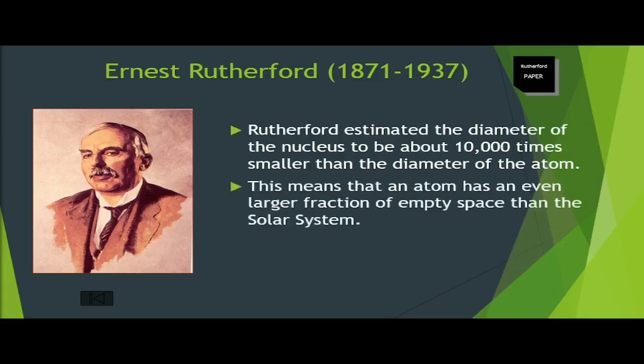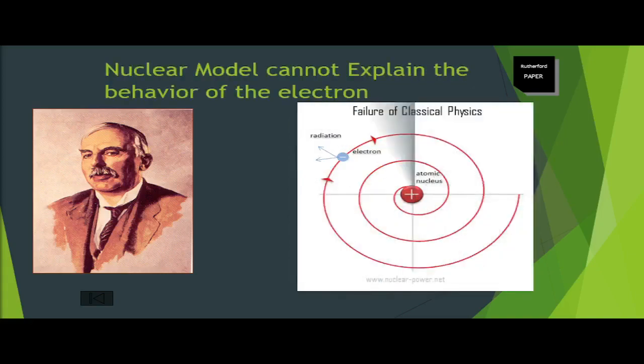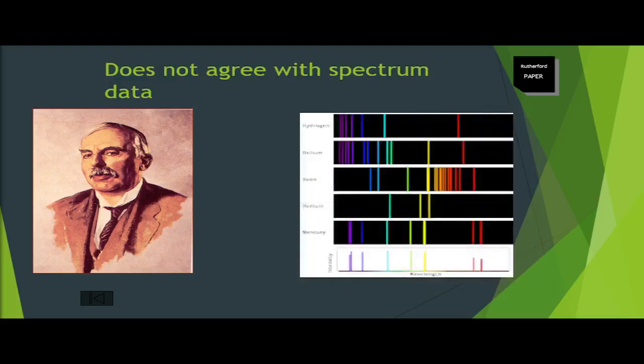This means that an atom has an even larger fraction of empty space than the solar system. Rutherford's model is still incomplete as it is not able to explain why the electron is not crushing to the nucleus despite the attractive force that exists between charges and also can't explain the fact that an accelerating charge must have been losing energy. This model is also not able to explain different chemical properties of atoms. Another flaw has to do with the radiation emitted by the orbiting electron. The frequency of the radiation should be the same as the frequency of the orbit. If electrons spiraled inward, the frequency would increase continuously and the light emitted by the atom would span a continuous range of frequencies. This prediction does not agree with experiments, which show that atoms emit only certain discrete frequencies of light.